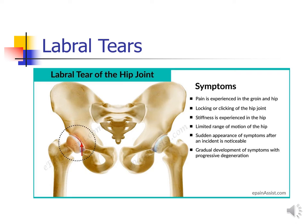What are some common symptoms in individuals who have labral pathology? First and foremost, they're likely going to have pain located in the groin or anterior hip region. They may have locking or clicking at the hip joint. They're going to have stiffness in the hip, especially after periods of prolonged sitting, and they're going to have limited range of motion, especially when we move the hip into combined movements of flexion, adduction, and internal rotation. That symptom profile should help you determine if the patient has a labral tear, along with the history and clinical exam.